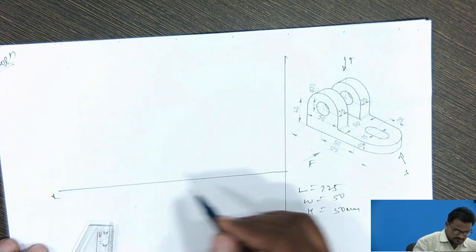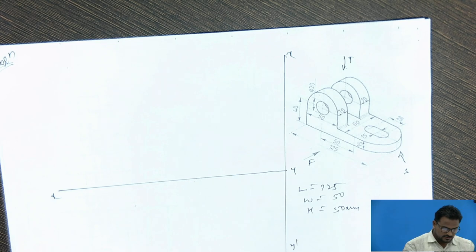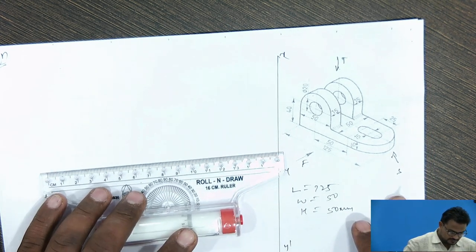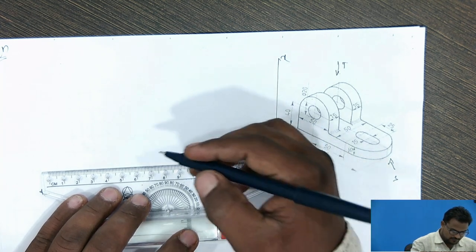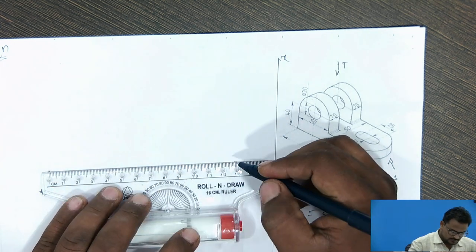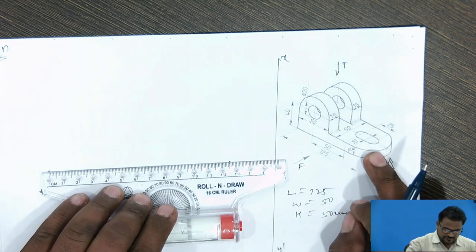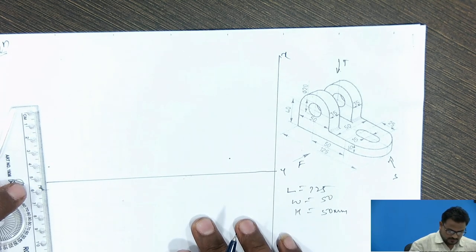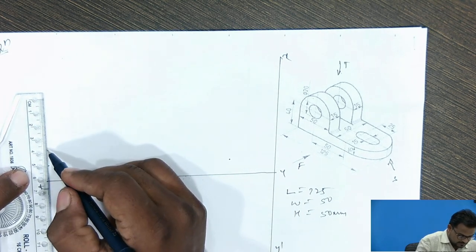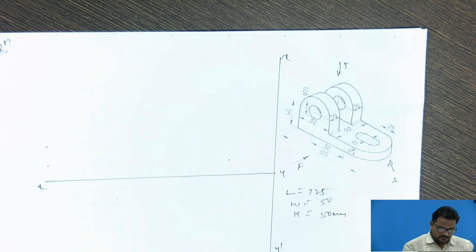This is the X-Y and X dash Y dash reference lines. Now I have to take 125 mm. This is the 125 mm length. Then a 15 mm block is given, so I have to take 15 mm from this — this is the 15 mm.